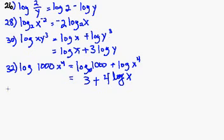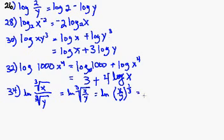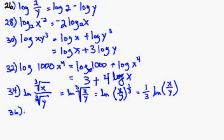Thirty-two. Here I have log one thousand times x to the fourth. That is equal to log one thousand plus log x to the fourth. Now remember this is base ten. So, ten to some power equals one thousand.